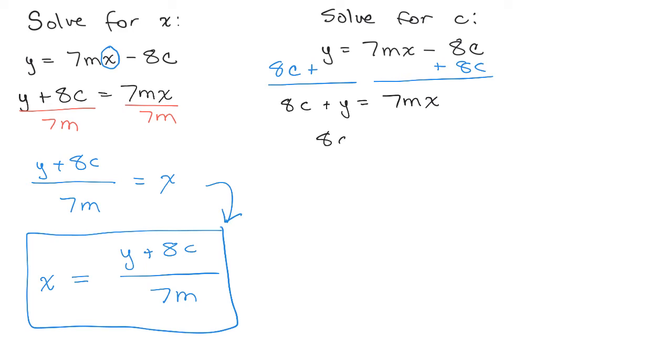So if I subtract y on the left side, I'll just have 8c. And on the right side, I'll have 7mx minus y. And then our last step would just be to divide both sides by 8 to isolate c.